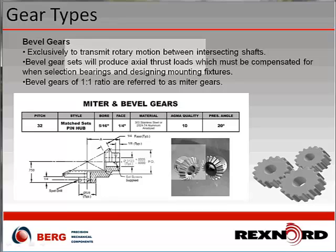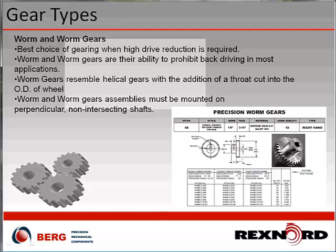Worm gears are the best choice when high drive reduction is required, and their key feature is the ability to prohibit back-driving in most applications. Worm gears resemble helical gears with an additional throat cut into the OD of the wheel. Worm and worm gear assemblies must be mounted on perpendicular non-intersecting shafts. A helical gear or spur gear cannot be used on a worm — worm gears need worms because of that additional throat cut into the OD of the wheel.